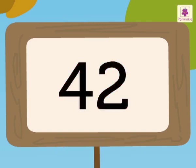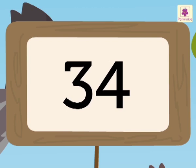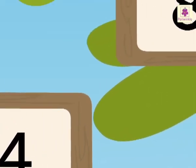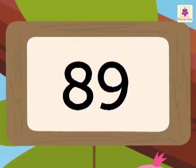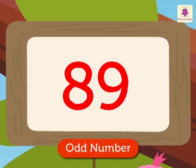Let us see which is the next number. Here it is, 34. Here, the number 4 is in the 1's place. So, 34 is an odd number. And the last number is 89. Here, the number 9 is in the 1's place. So, 89 is an odd number.